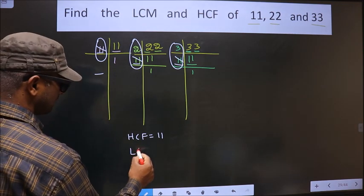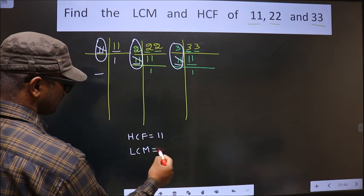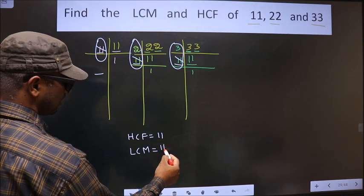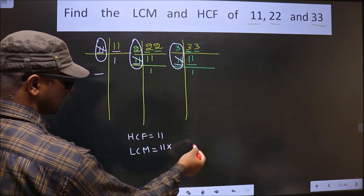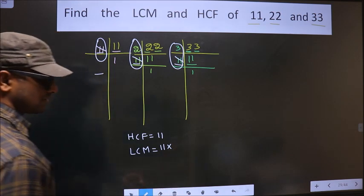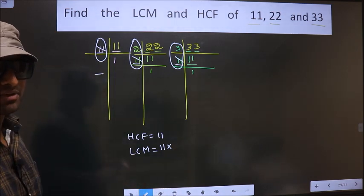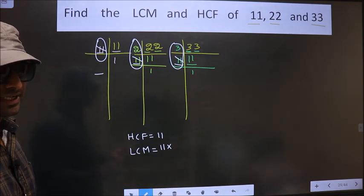Now to get LCM. Whatever HCF you have got, to that we should multiply by certain numbers. What number shall we multiply? How do we decide it?